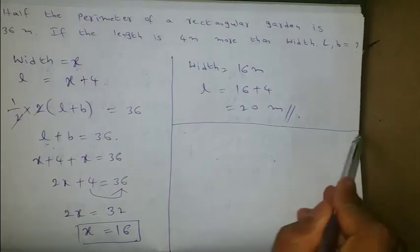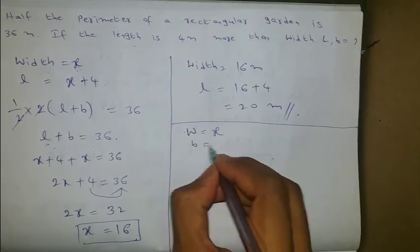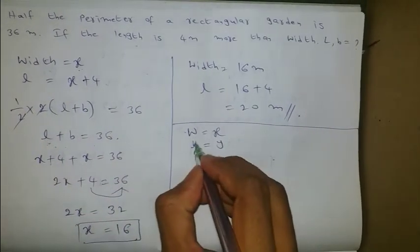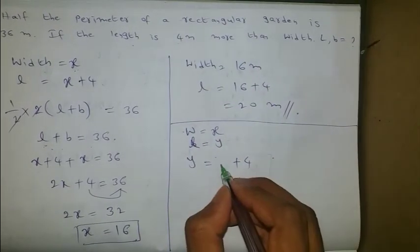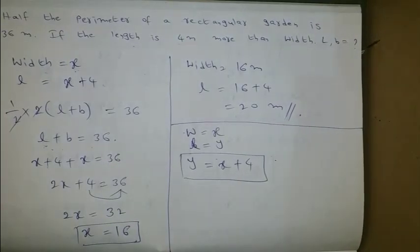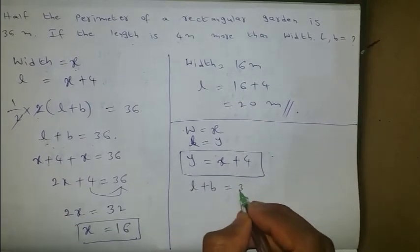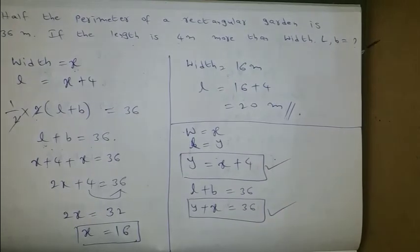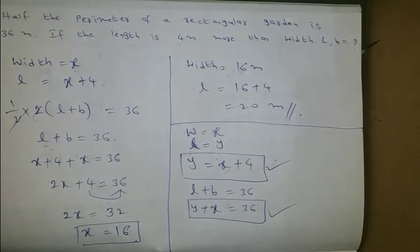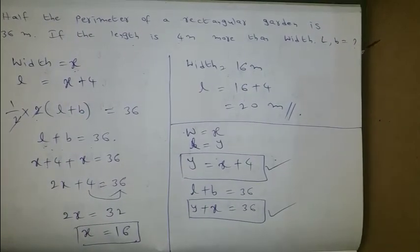This was the first method using a single variable. In the second method, taking width as x and length as y: the first equation is y equals x plus 4, and the second equation is y plus x equals 36. Solving these two equations by elimination or substitution will give the same x and y values.